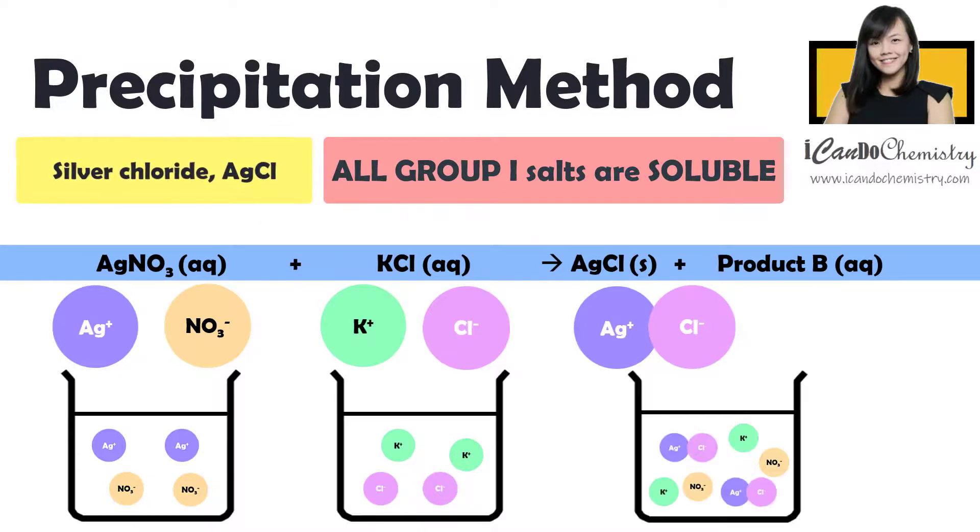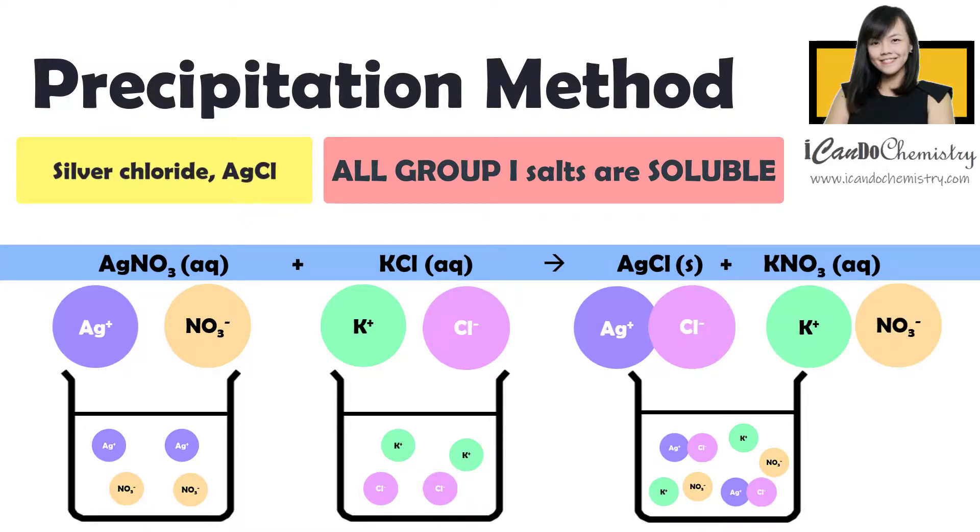Mix them together, silver ion will be attracted to chloride ion. Insoluble silver chloride will be precipitated. So now silver chloride is a precipitate, which is a solid. Hence we change the state symbol to S. Potassium ion and nitrate ion remain in the solution. Hence the state symbol is Aq.